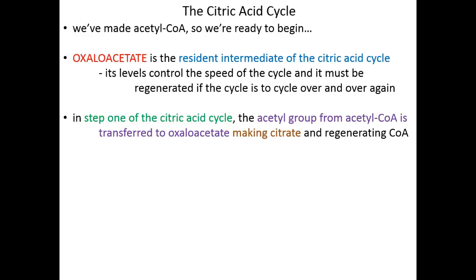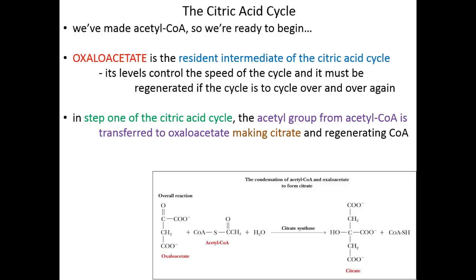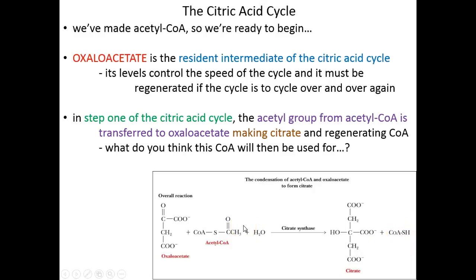In step one of the citric acid cycle, the acetyl group is going to be unlinked from CoA and transferred to oxaloacetate, making the six-carbon molecule citrate and releasing CoA so that it can go and pick up another acetyl from the PDC. Oxaloacetate and acetyl-CoA come together and create citrate, as well as CoA on its own. The enzyme responsible for catalyzing this reaction is called citrate synthase — a really good name. Synthase suggests that this enzyme makes something, and what it makes is citrate.